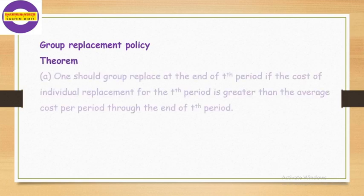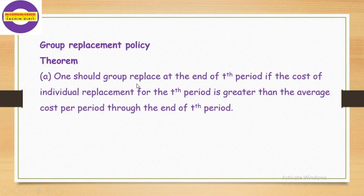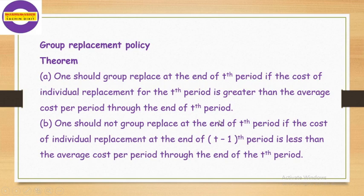Group replacement policy is defined as: one should group replace at the end of the t-th period if the cost of individual replacement at the end of the t-th period is greater than the average cost per period through the end of the t-th period. One should not group replace at the end of the t-th period if this cost is less than the average cost per period through the end of the t-th period.